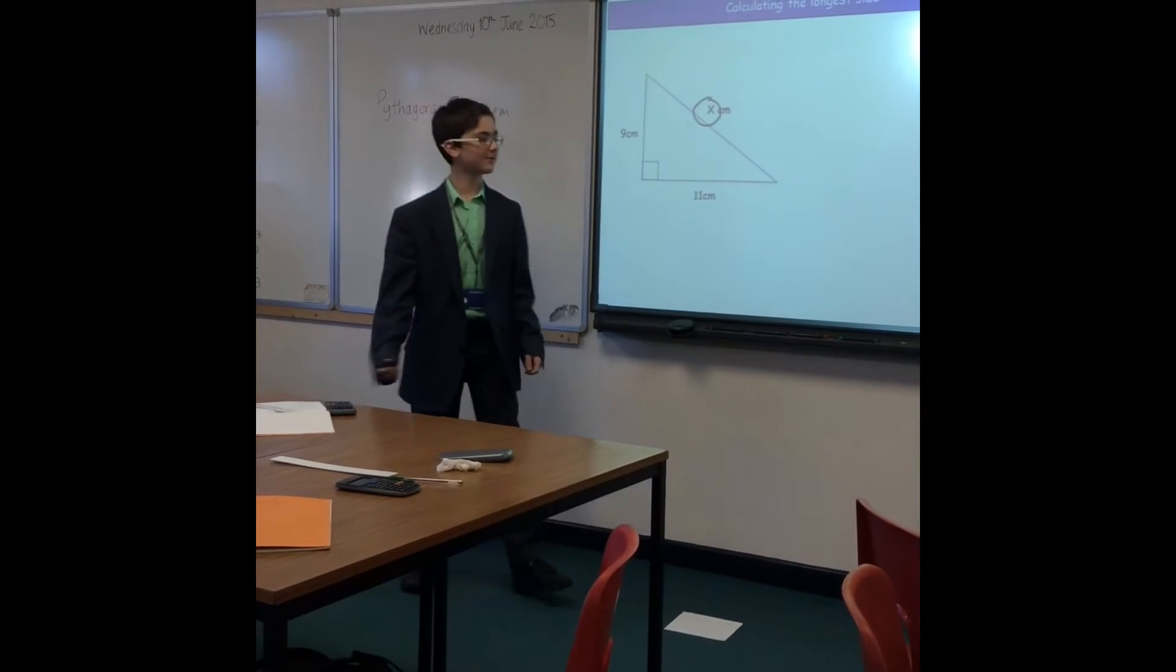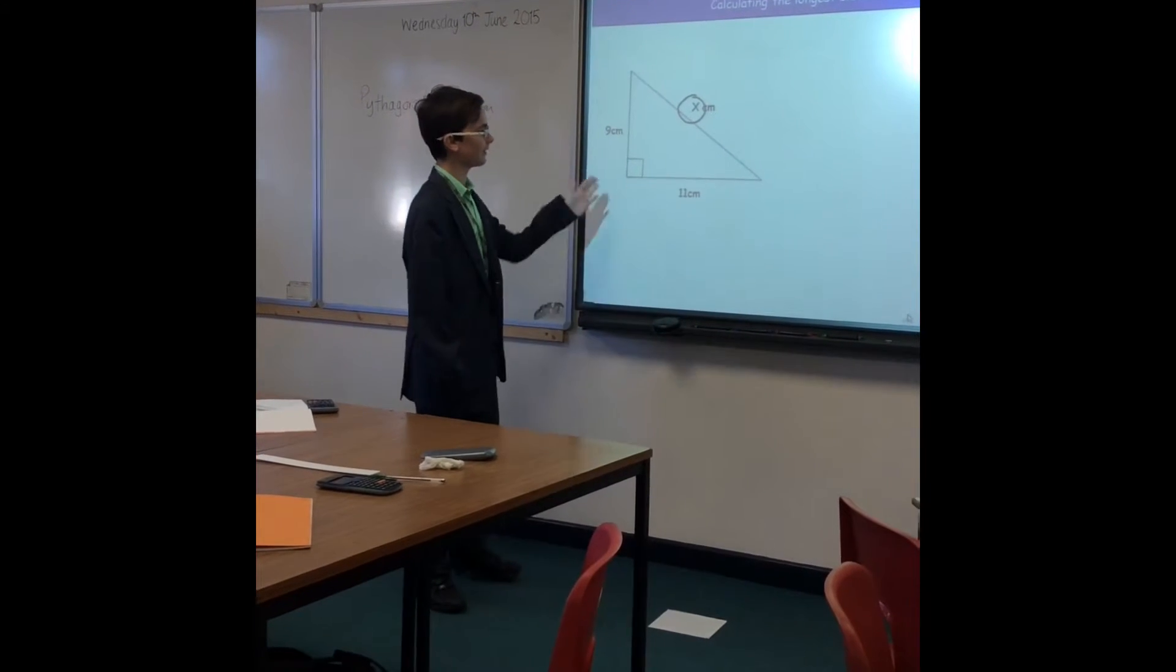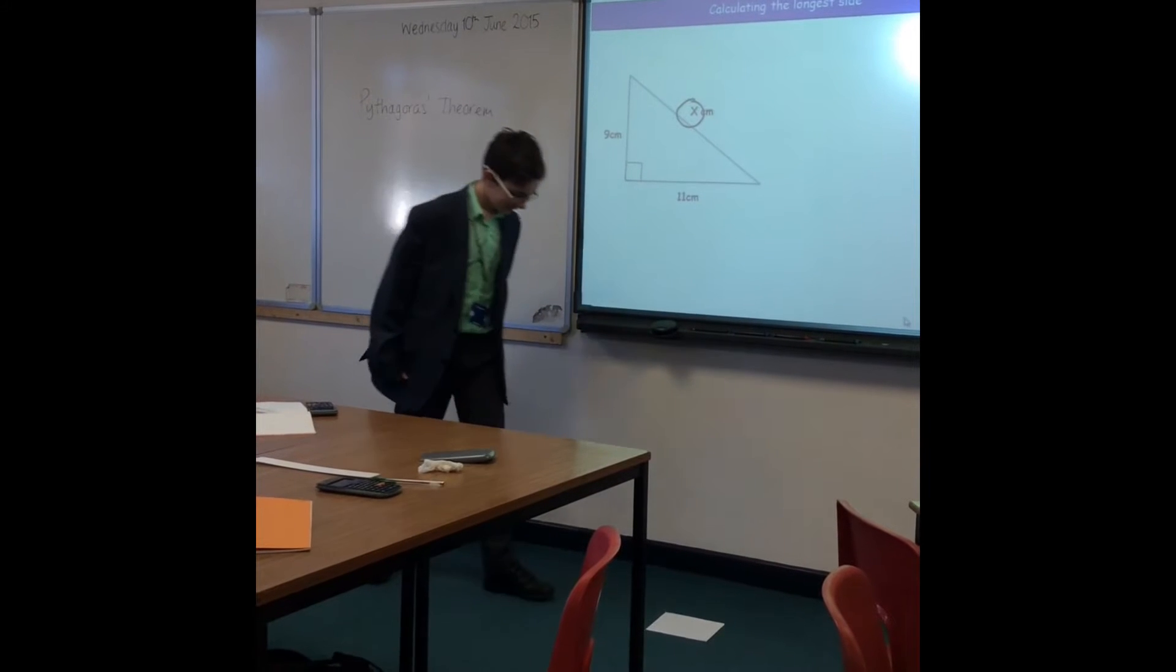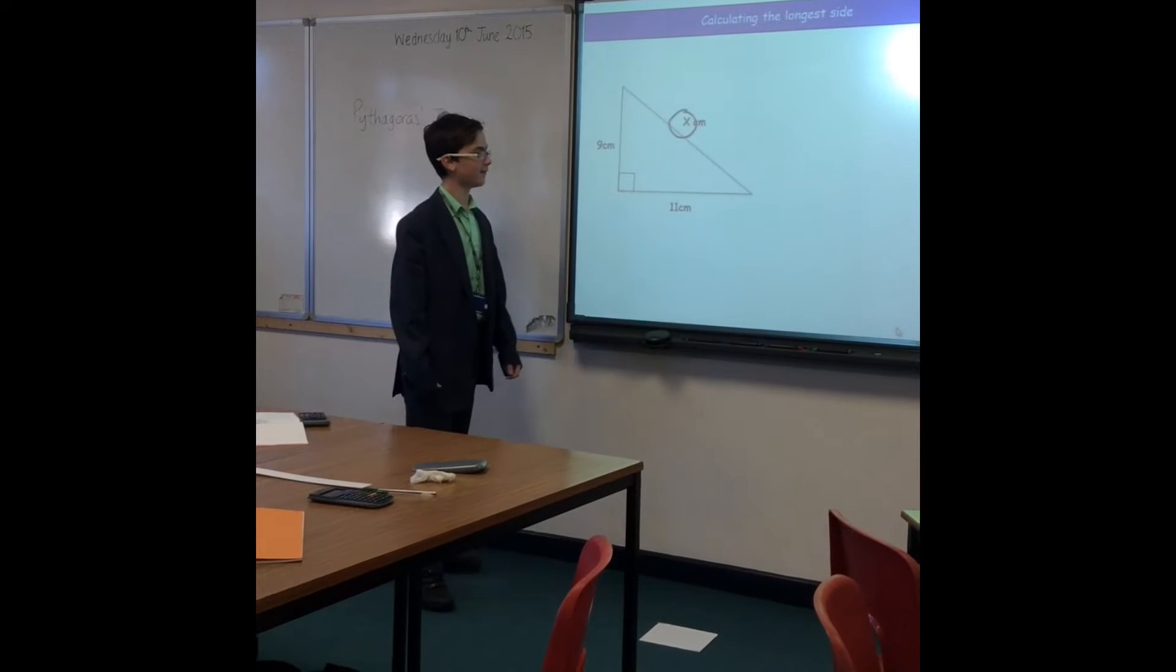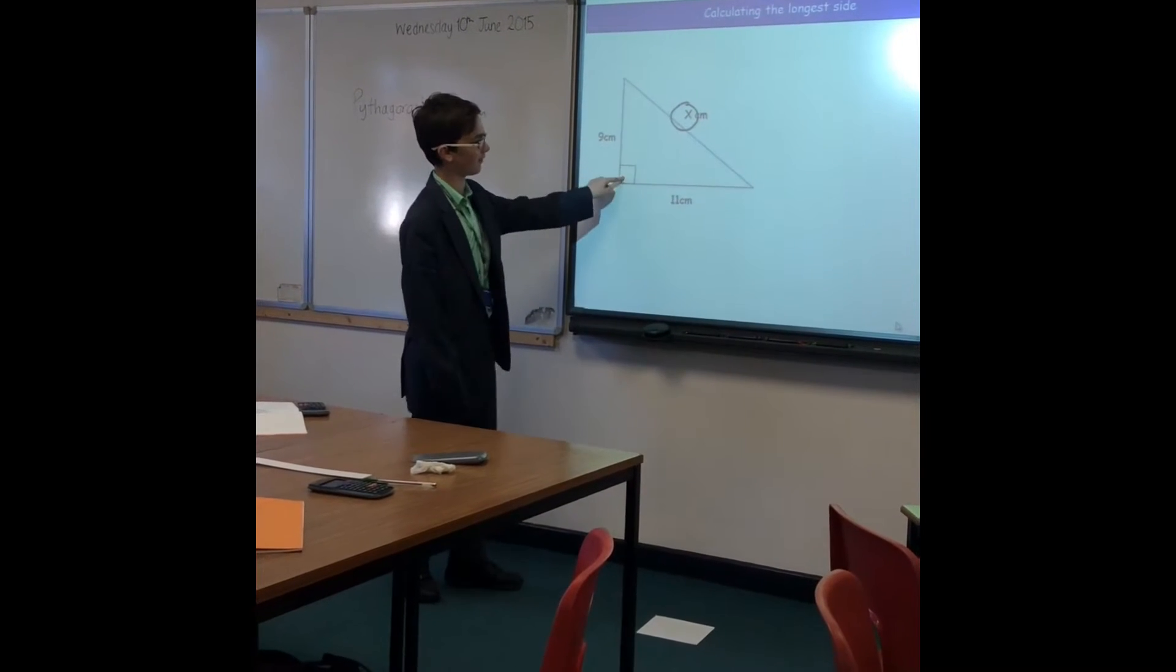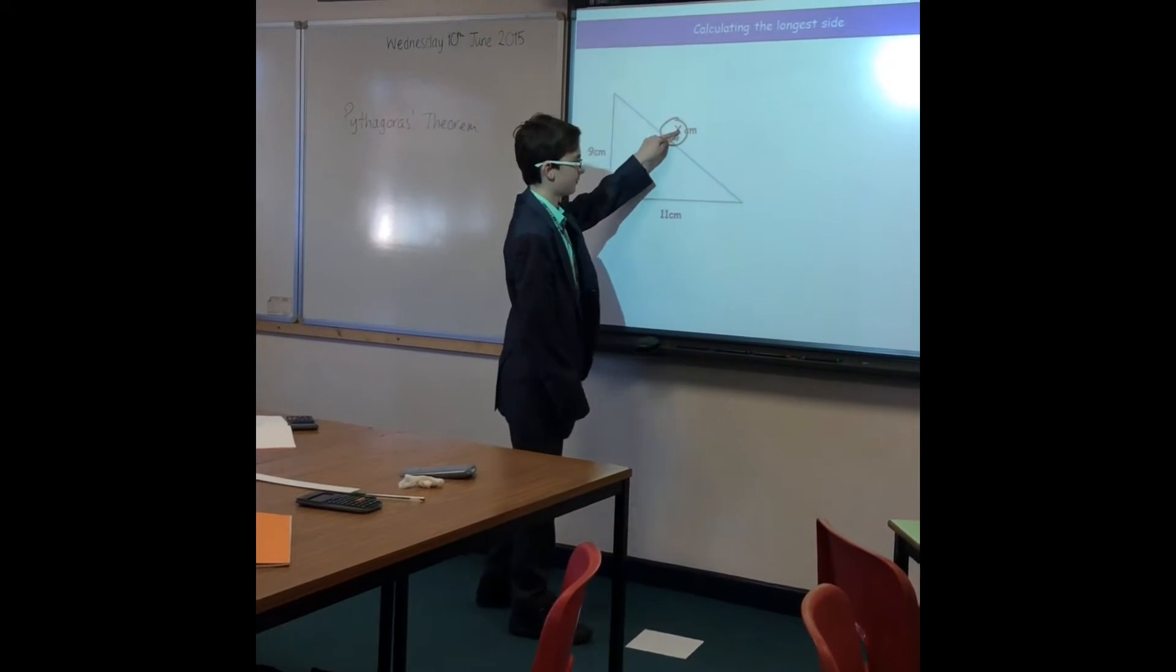Hello class, I'm Mr. Hayward and I'm going to teach you today how to do Pythagoras' Theorem. We need to find the hypotenuse, which is the longest side of the triangle. To find this, it is always opposite the right angle, so this is the hypotenuse.